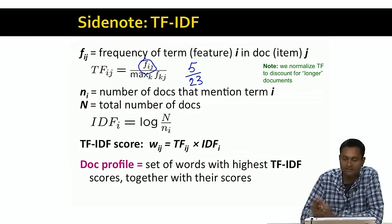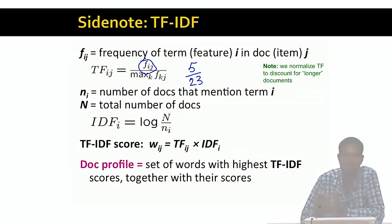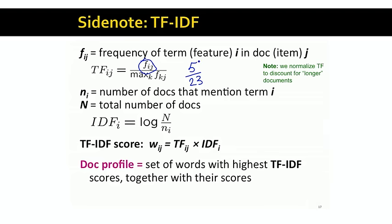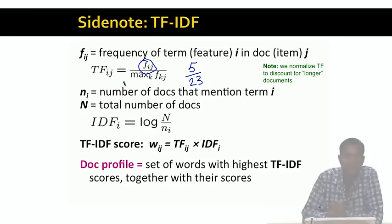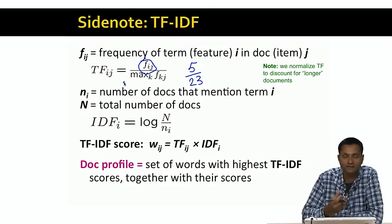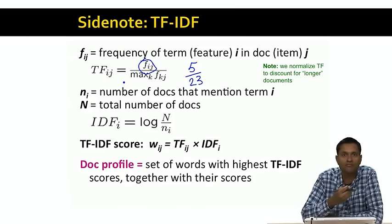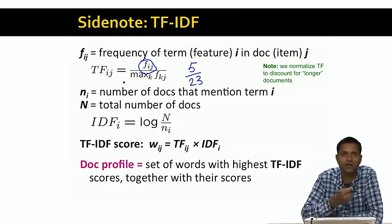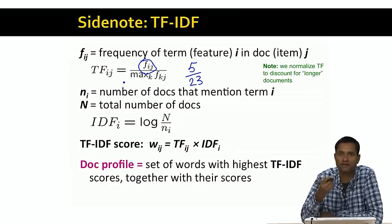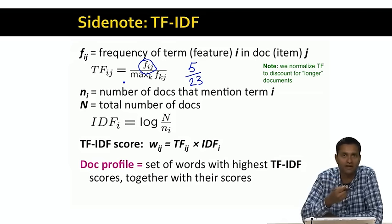Now, I'm glossing over the fact that we need to normalize TF to account for different document lengths — let's just ignore that for the moment. The term frequency captures the number of times a term appears in a document. Intuitively, the more often a term appears in a document, the more important a feature it is. For example, if a document mentions the word 'apple' five times, it is more important in that document than another document that mentions it just once.